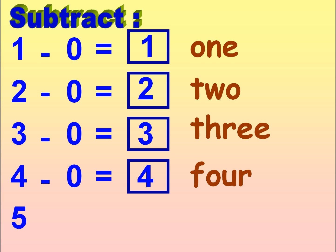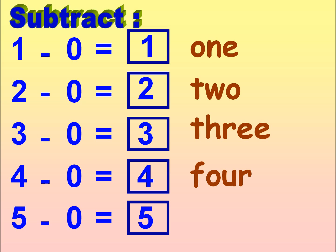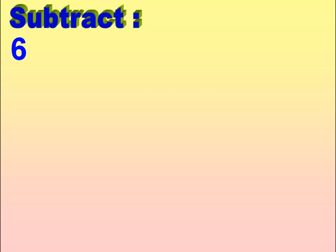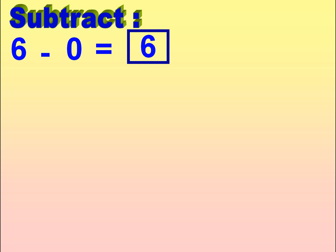5 minus 0 is equal to 5. F-I-V-E, 5. 6 minus 0 is equal to 6. S-I-X, 6.